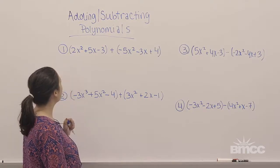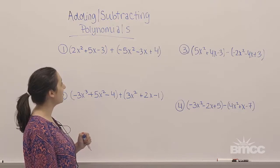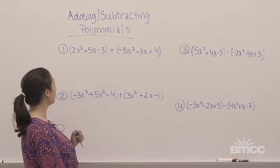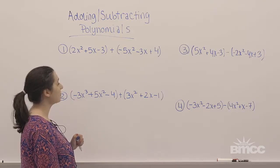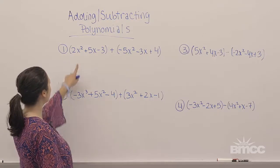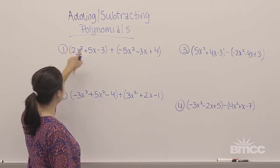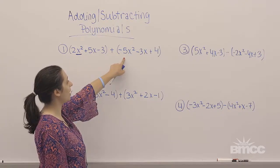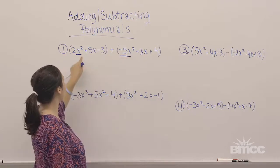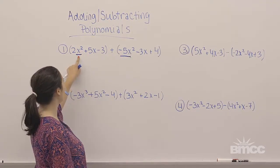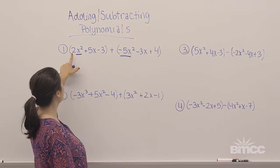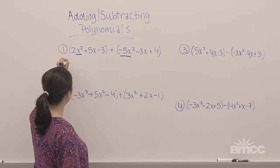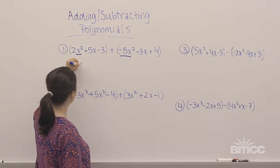Our first example is 2x squared plus 5x minus 3 plus negative 5x squared minus 3x plus 4. How we add polynomials is we look for like terms — meaning they have the same base being raised to the same power. So 2x squared and negative 5x squared are like terms because they both have x squared. We add the coefficients: 2 plus negative 5 is negative 3, then rewrite x squared.